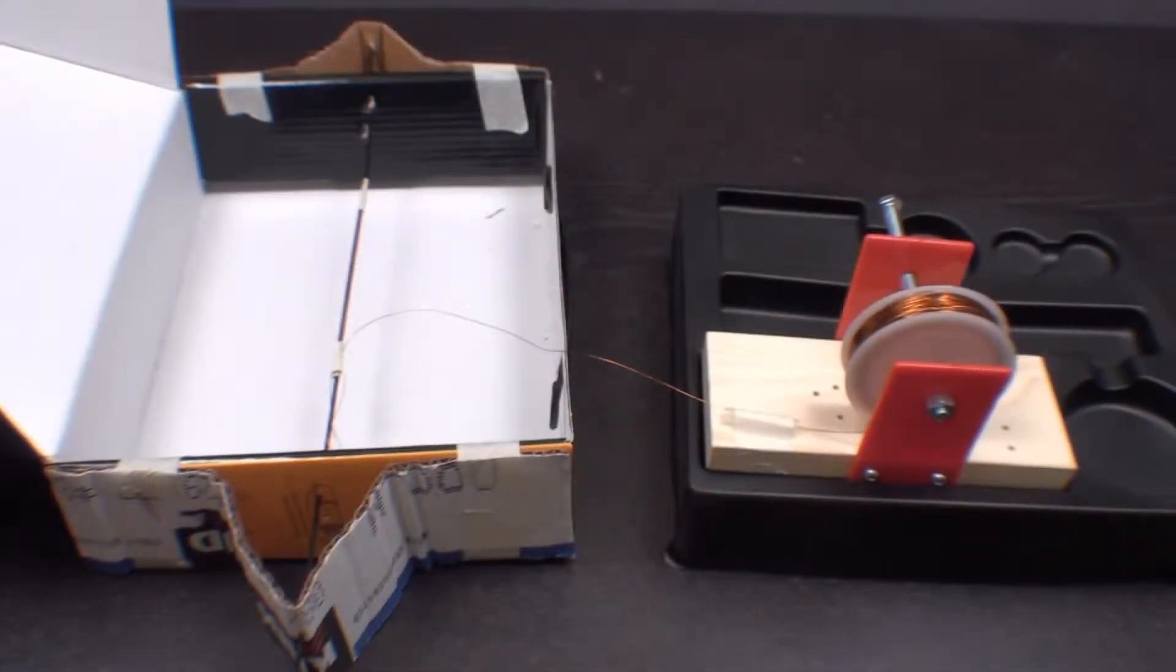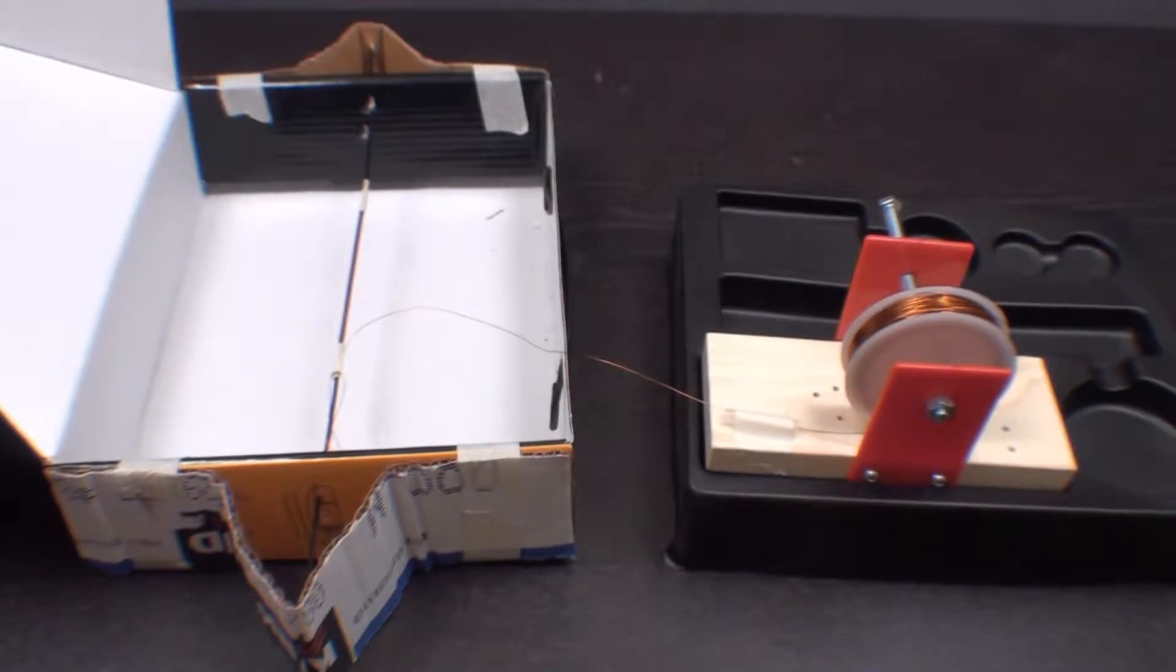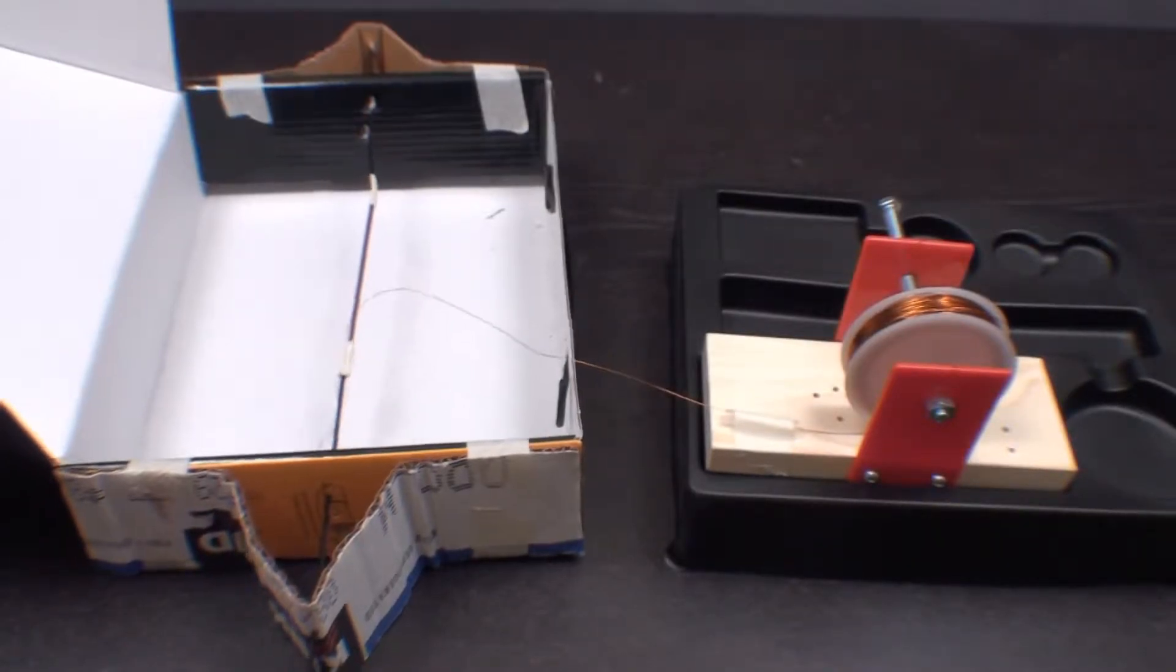First, you will need to create a winding mechanism to properly wind the magnetic wire around the iron core.